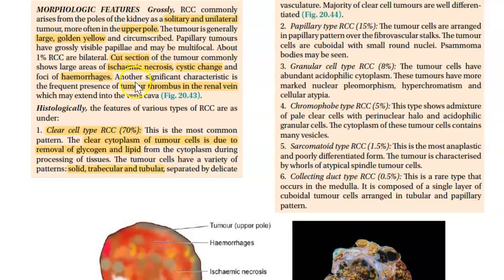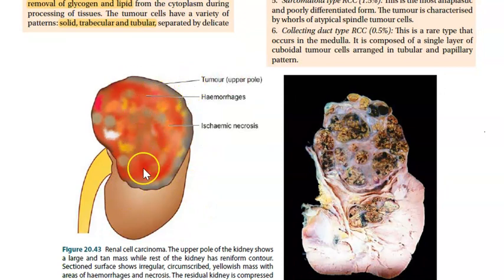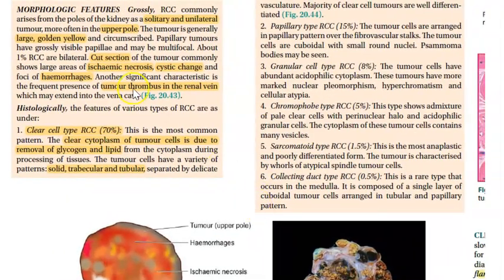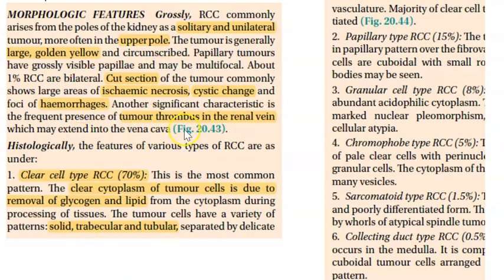In gross pathology you will see a solitary unilateral tumor often in the upper pole. The tumor is large and golden yellow. The cut section shows ischemic necrosis, cystic change, and hemorrhage. There can also be tumor thrombus in the renal vein.